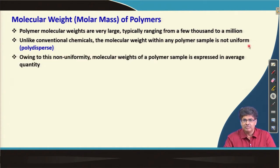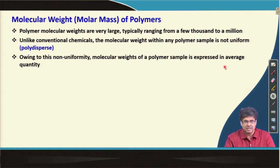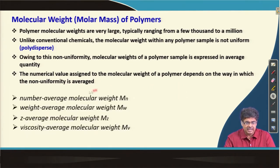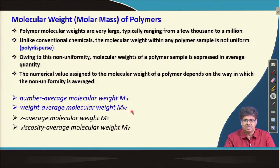Because of this non-uniformity of molecular weights in a particular sample, we generally express polymer molecular weight as an average molecular weight. We can do averaging in various ways, and depending upon the method of averaging, the name changes. The numerical value assigned to the molecular weight depends on how this non-uniformity is averaged. Typically four average molecular weights are reported in the literature, of which number average molecular weight and weight average molecular weight are the most important and most frequently reported.